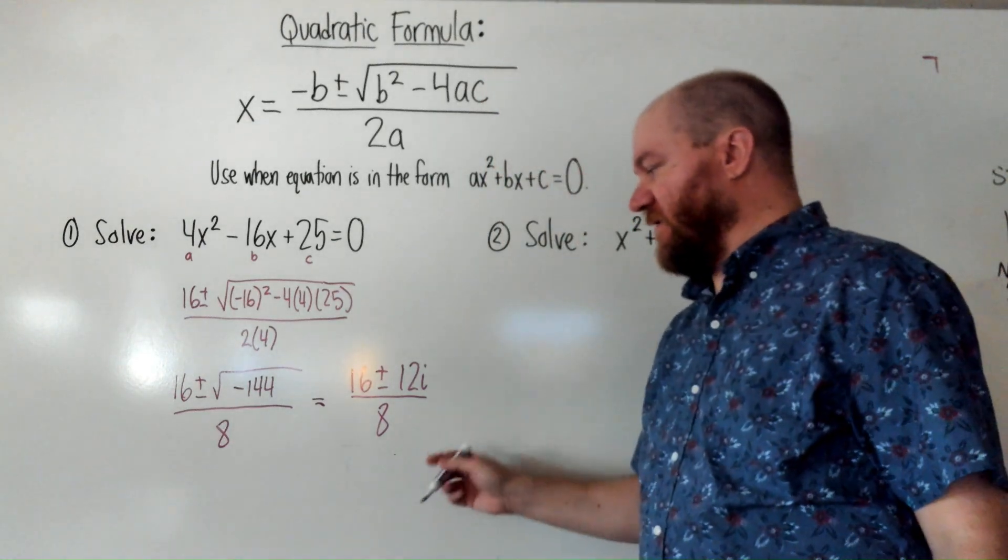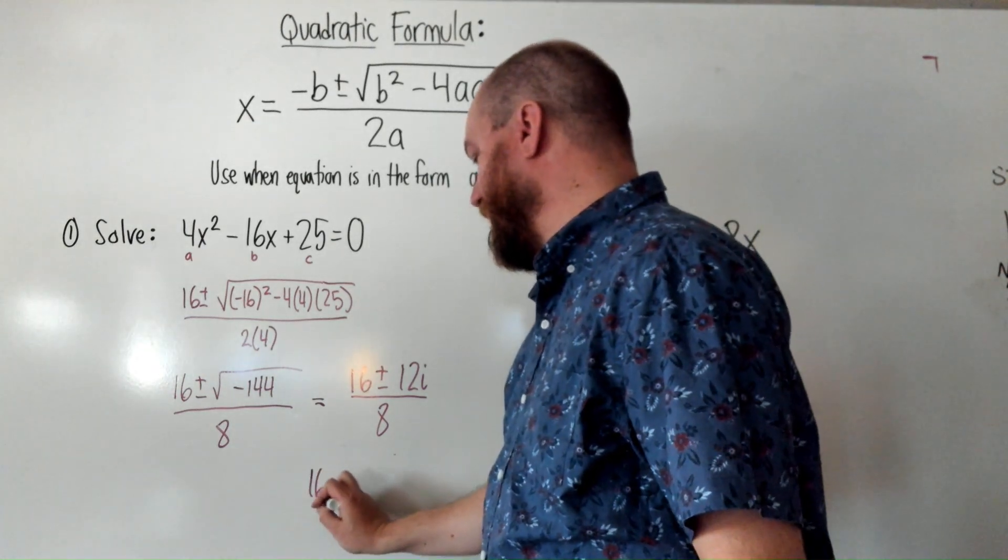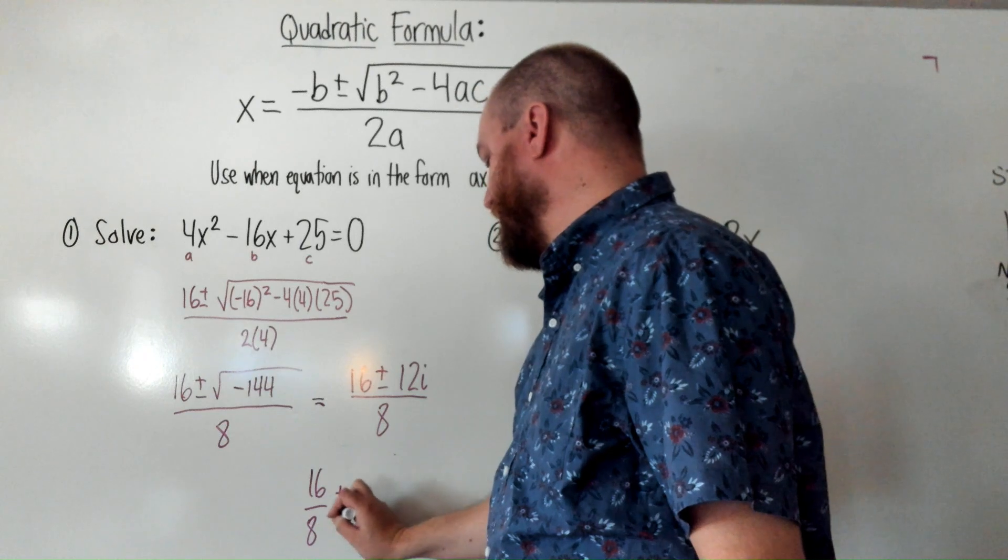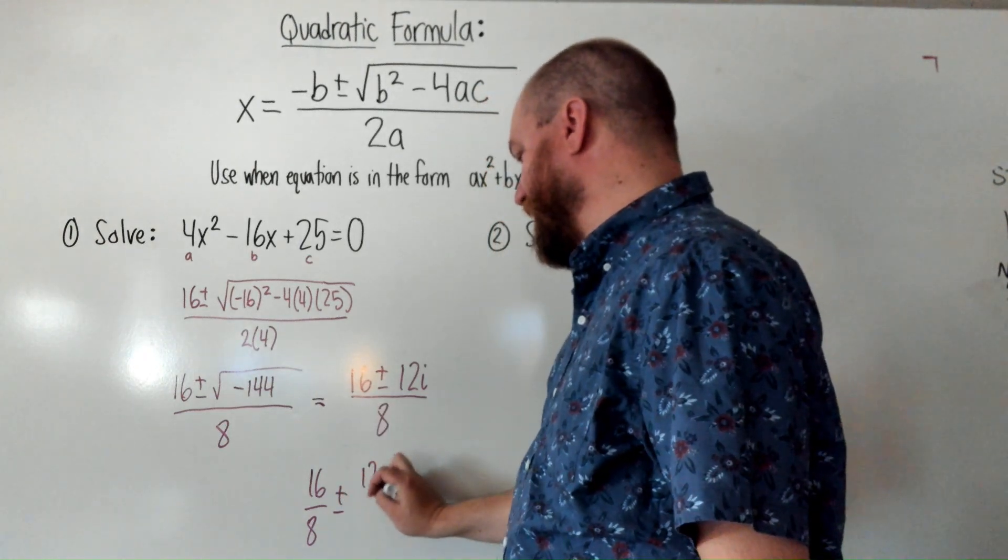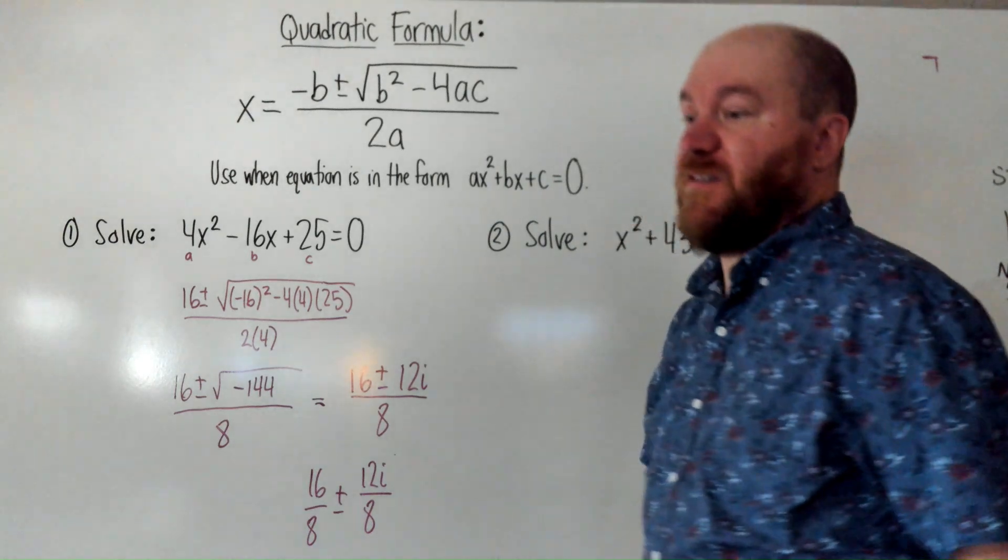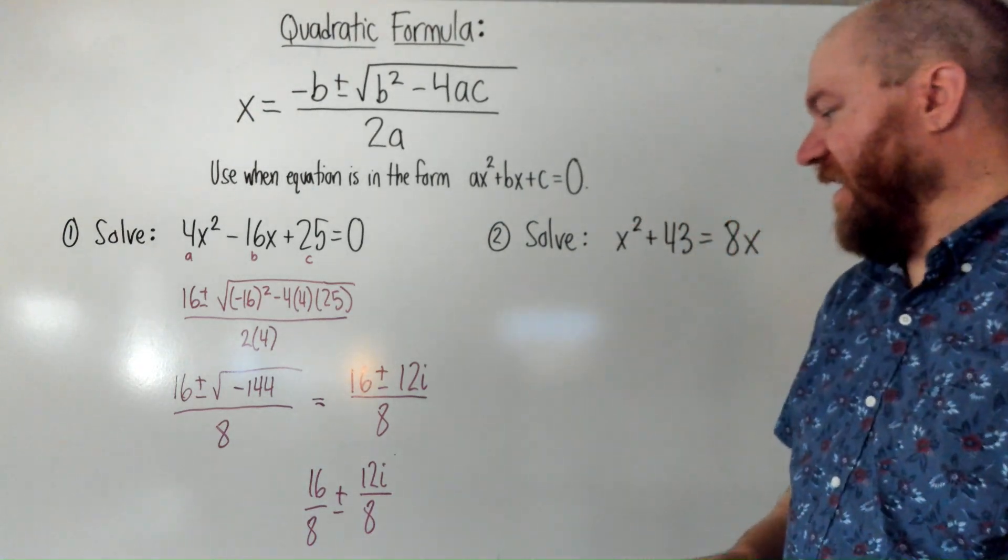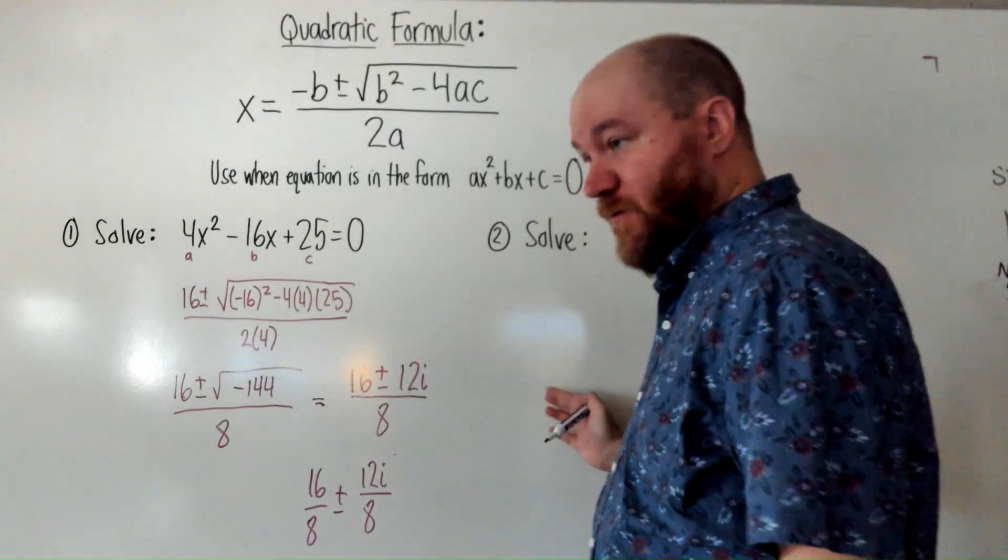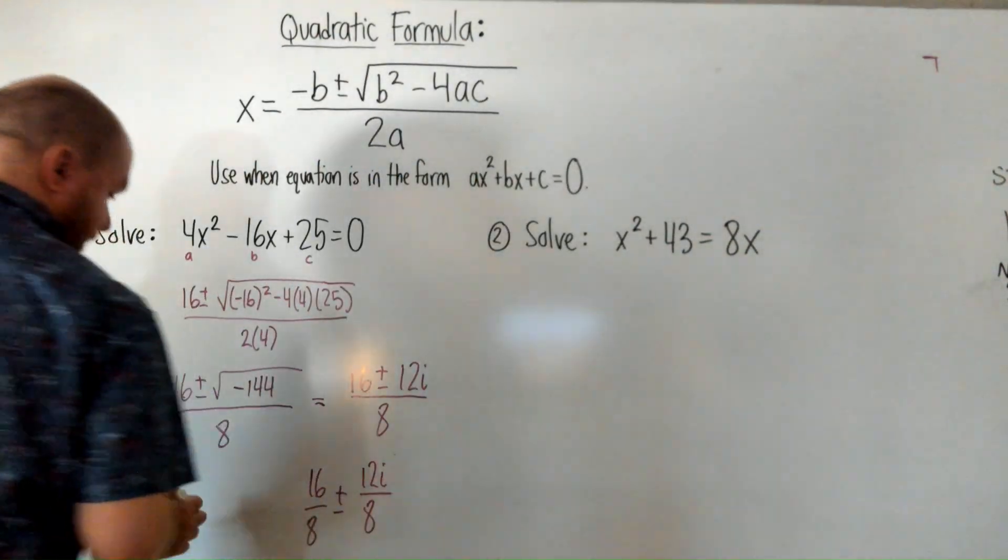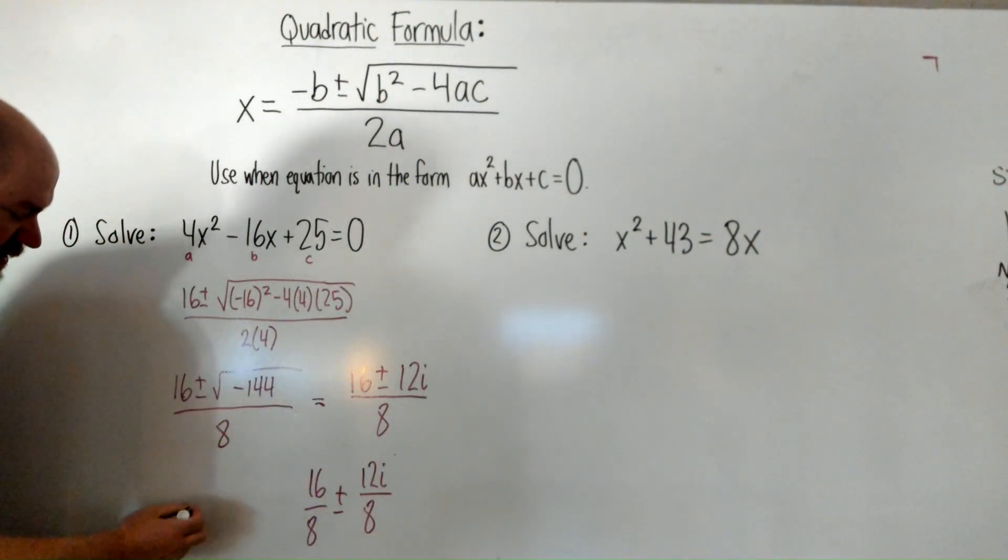I can simplify this more. I can split it into two fractions. Everything needs to be divided by 8. So, let's split it so that everything is divided by 8. And then, for room, I'm going to go over here and write the answer. The 16 over 8 is 2.